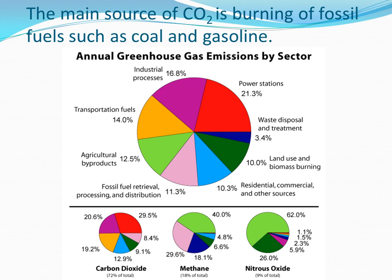So if you turn off that light switch or you get a more efficient light bulb to a more efficient refrigerator, when you save on your own energy costs, you are also saving the amount of CO2 that's being emitted by that power station.